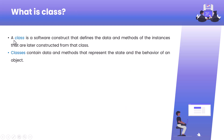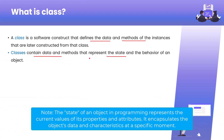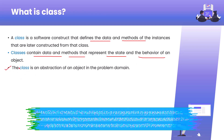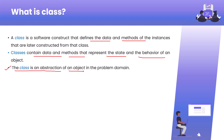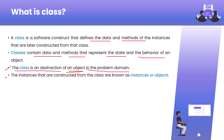I hope now it's clear that a class is a software construct that defines data and methods — data represents the state and method represents the behavior of an object. Also, a class is an abstraction of an object in the real world domain. When we create the object we hide the code so that other people cannot see the implementation of that particular class, which is why we say a class is an abstraction of an object in the problem domain.